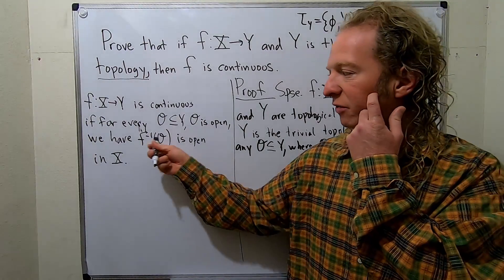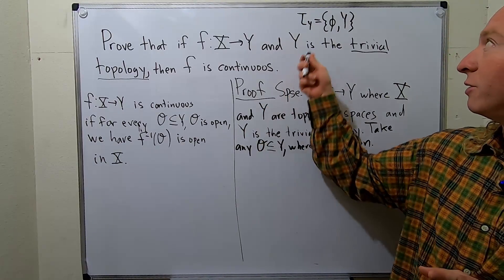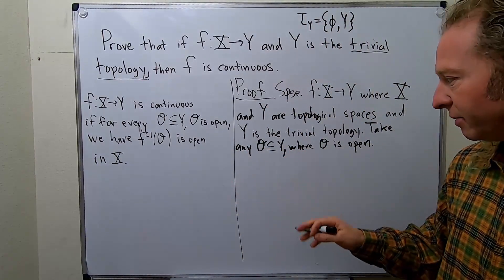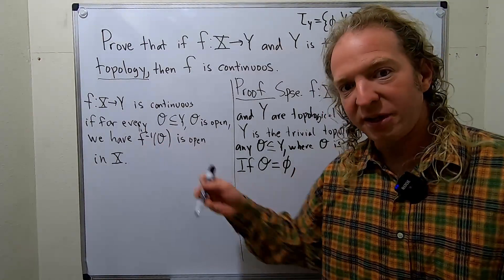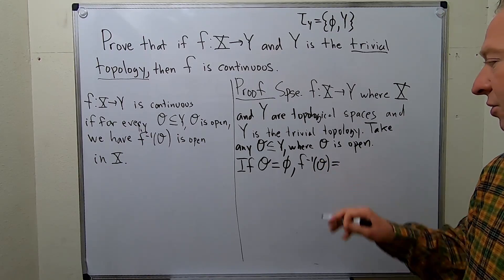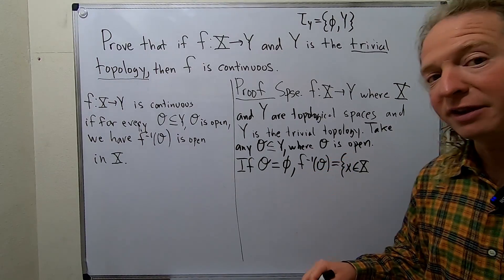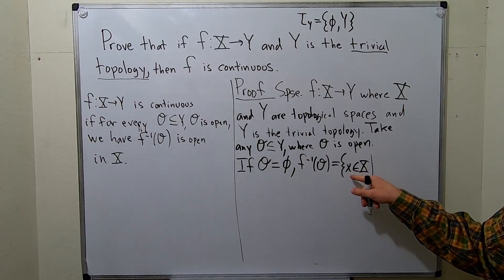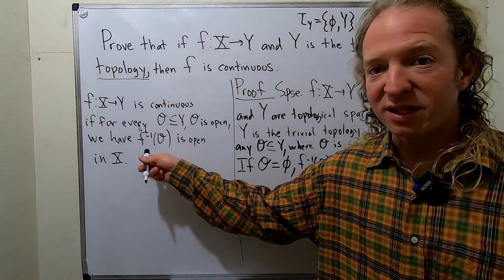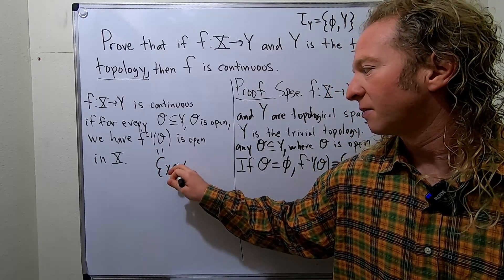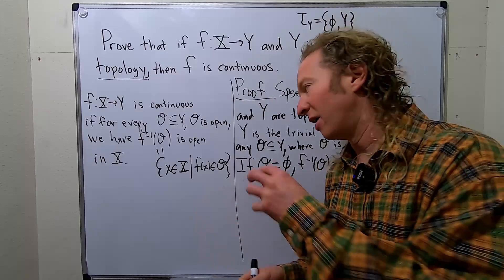Now we simply have to look at the inverse image of O in X. Since Y is the trivial topology, there are two cases: O could be either the empty set or the whole set Y. If O is equal to the empty set, the inverse image of O is the set of all x in X such that f(x) is in O — that is, all x in X such that f(x) is in the empty set.